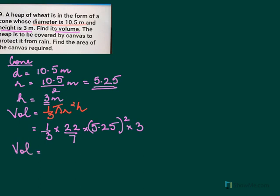So your volume equal to 1 by 3 into 22 by 7, 5.25 into 5.25 into 3. Now again we have to remove the decimal. If we remove this decimal, we have 2 decimal places here, so it becomes over 100. To remove this decimal, we have 2 decimal places over 100.